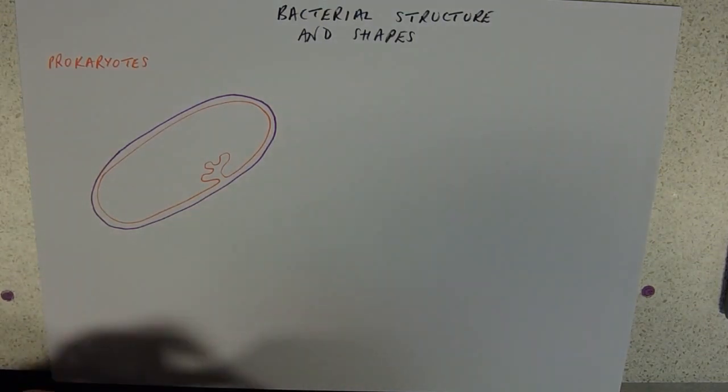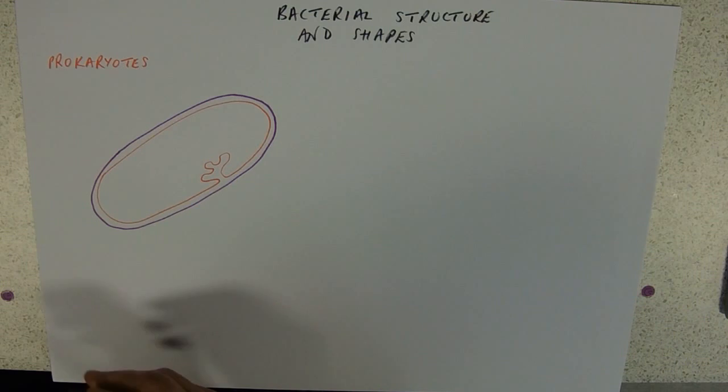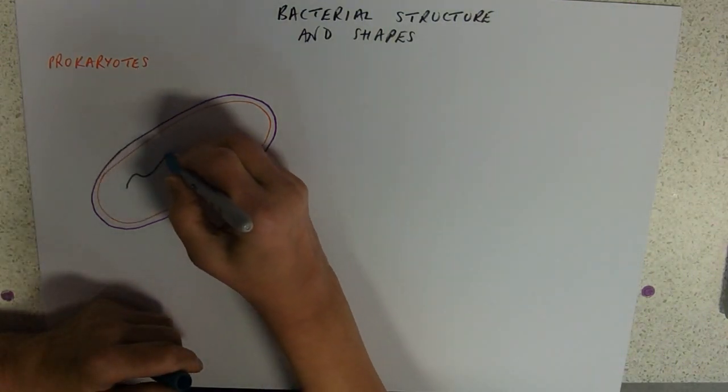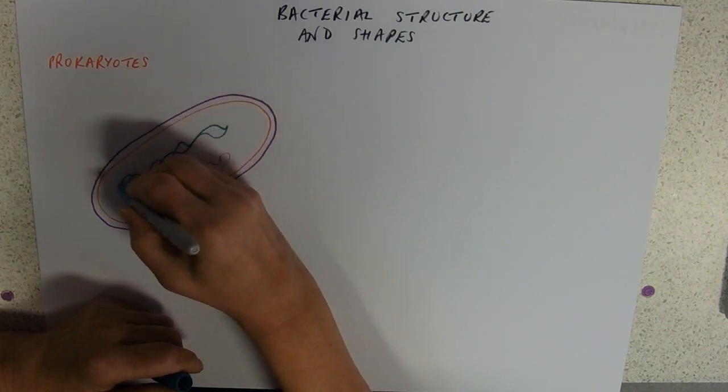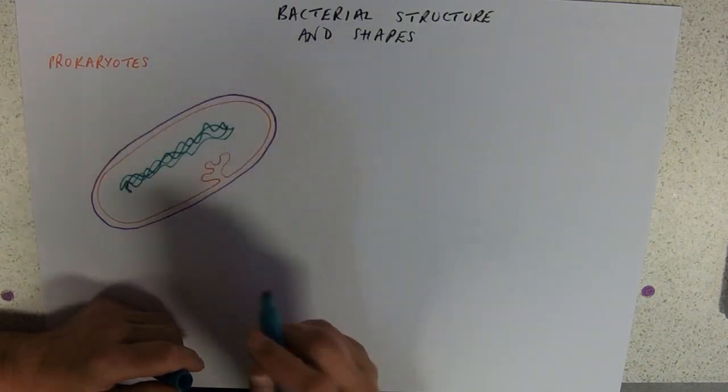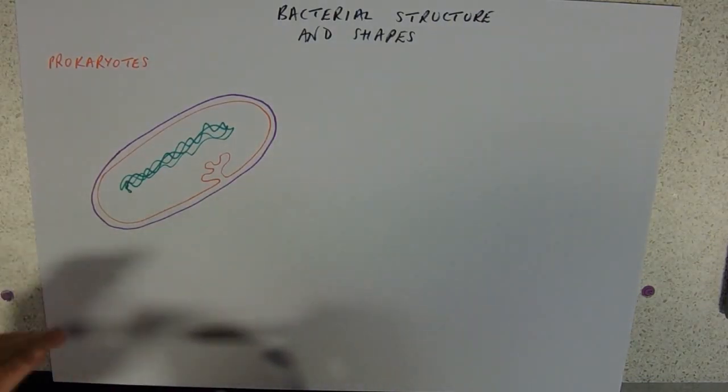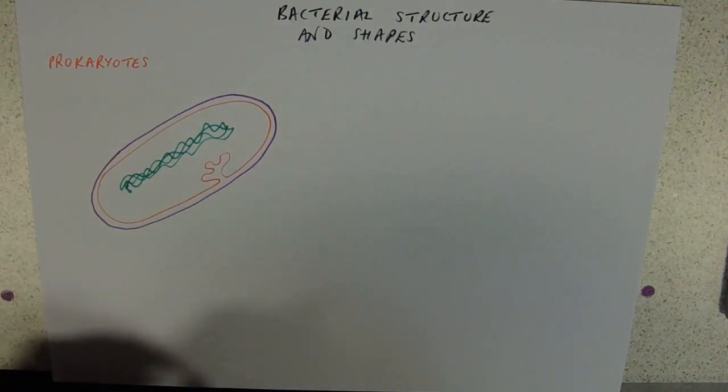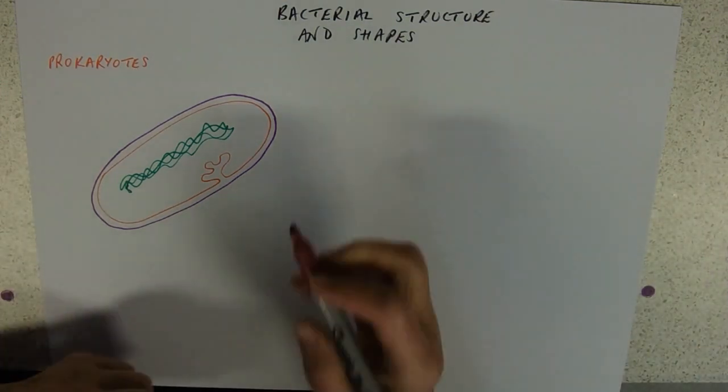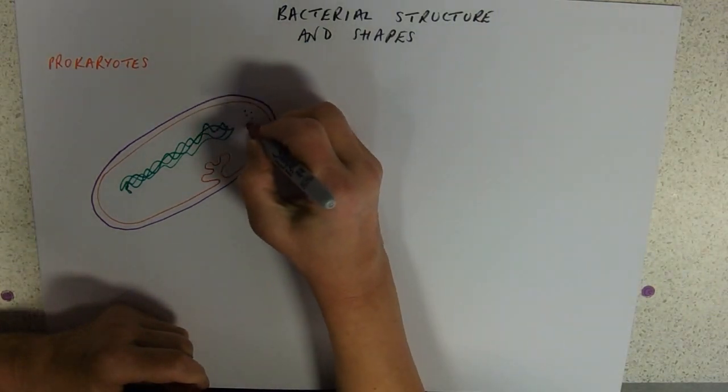And inside we've got a nucleoid, which is a tangled loop of DNA. And, of course, the one thing that you all remember is that studded around inside we've got ribosomes.